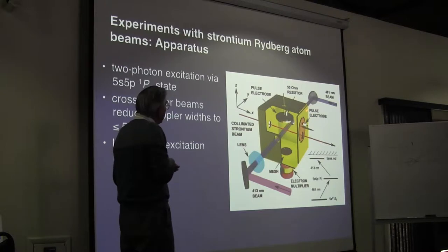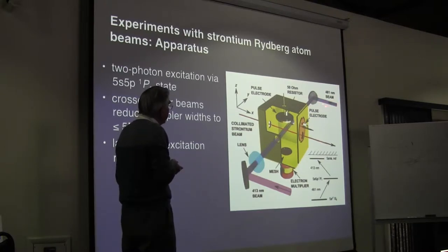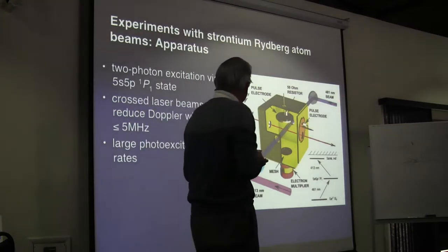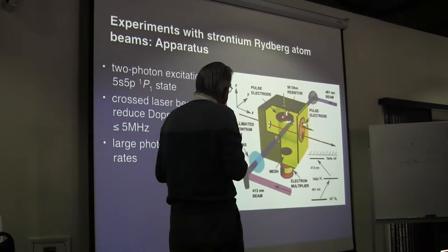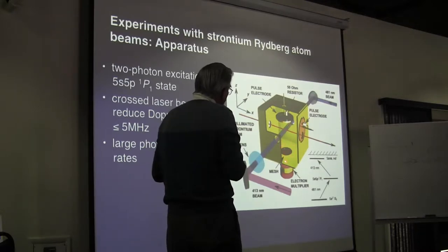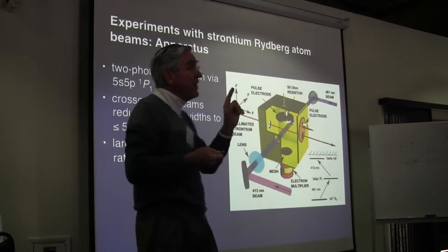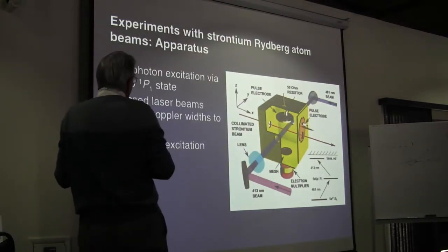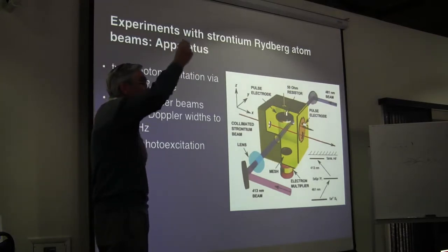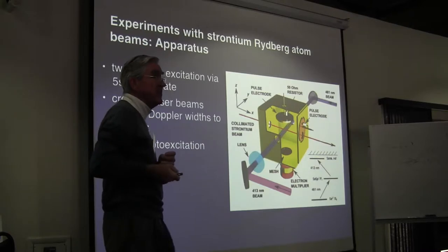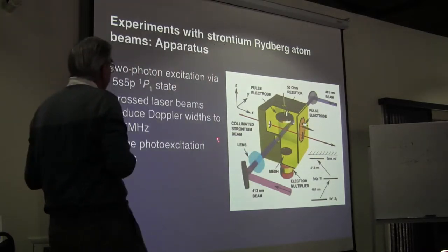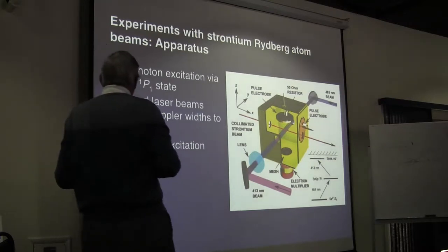We operate the experiment in pulsed mode. We chop the output of the 461 nanometer laser into pulses of about 500 nanosecond duration. We create a burst of Rydberg atoms, then apply electric field pulses to them using fast voltage pulses to two electrodes, and detect the number produced by field ionization. We apply a voltage ramp to the lower electrode; any electrons produced are attracted to the electron multiplier and detected. The multiplier is a bell-mouthed channeltron, so we can only detect one Rydberg atom after one laser pulse, and must keep the probability for excitation low.